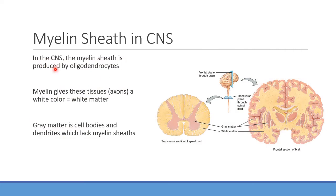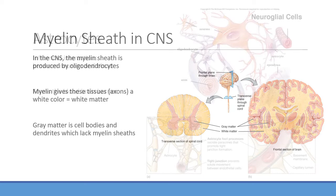The myelin sheath — formed by oligodendrocytes in the CNS and Schwann cells in the peripheral nervous system — gives axons their white color. That's what we mean by white matter versus gray matter. Gray matter is made up of cell bodies that lack myelin sheaths. Myelin is especially important in the spinal cord for long-distance transmission of signals from, say, your head all the way down to your toes.